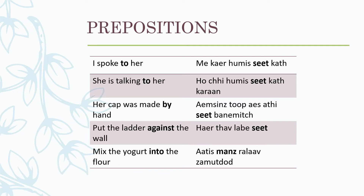Put the ladder against the wall: here thou labisuit. Against is 'suit' over here, and love is wall, here is ladder. Mix the yogurt into the flour: oh it is manz ralav zaamutad manz. Into is 'manz', yogurt is 'zaamutad', oat is flour, and ralav or ralavun is to mix.